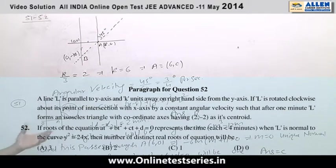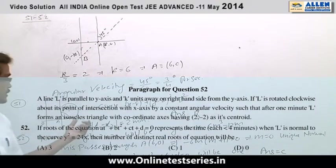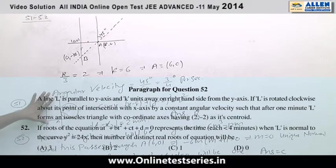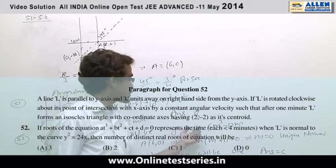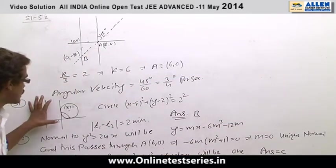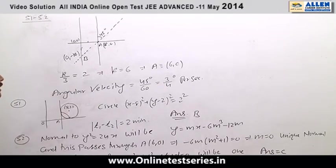In question number 52, we have to find the number of normals of y squared equals 24x when line L is normal to the curve. Normal of this equation will be y equals mx minus 6m cubed minus 12m. We have to find that L is normal to this curve.